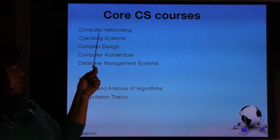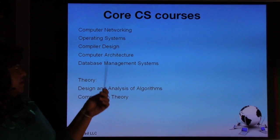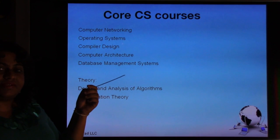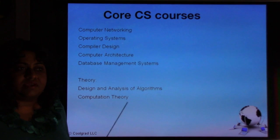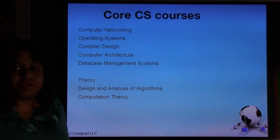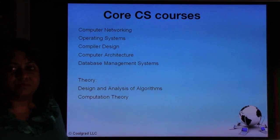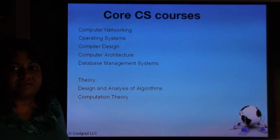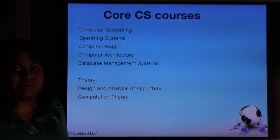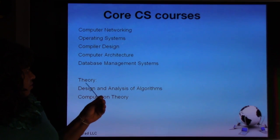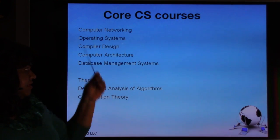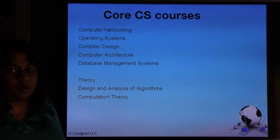Core computer science courses include computer networking, operating systems, compiler design, computer architecture, and database management systems. Compiler design was actually one of the toughest courses at my university — at the undergraduate senior level, most students spent about 40 hours a week on it alone. Advanced operating systems was the next toughest. The mandatory theoretical courses are Design and Analysis of Algorithms and Computation Theory — either you take them at the master's level or you need a waiver from your undergraduate senior-level coursework.